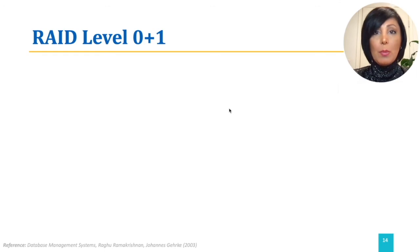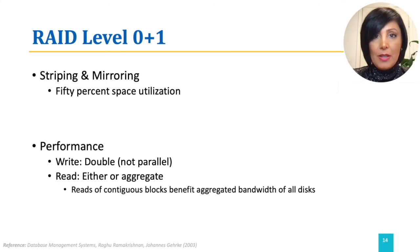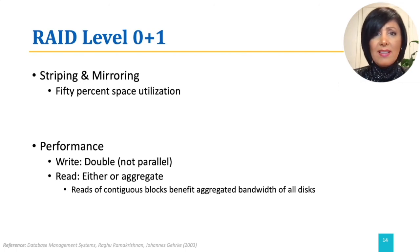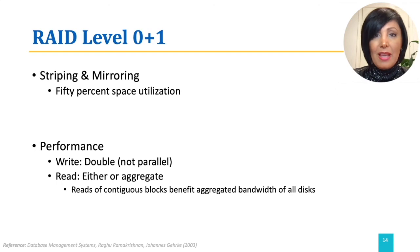RAID level one has no stripping, but RAID level zero plus one, also sometimes referred to as RAID level 10, combines stripping and mirroring. As in RAID level one, the read of a block could be performed on either of the disks, and reads for contiguous blocks of data could benefit from the aggregated bandwidth of all disks. Write performance is similar to RAID level one, as it also needs double the writes that do not happen at the same time. In our example, RAID level 10 will also have four check disks with mirrored data, and effective space utilization is always 50% because of mirroring.